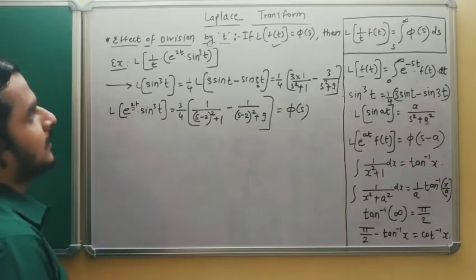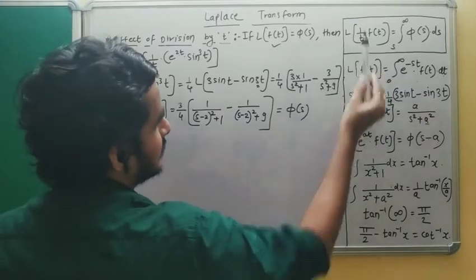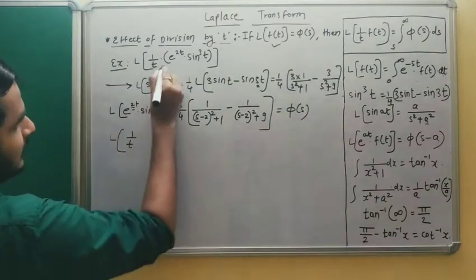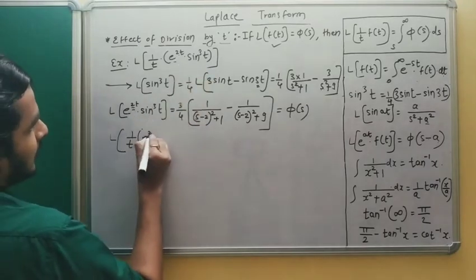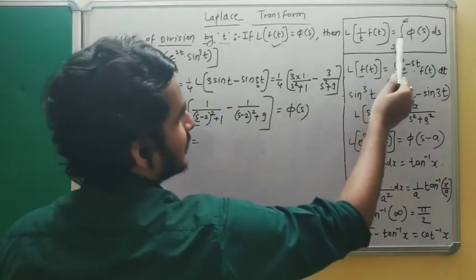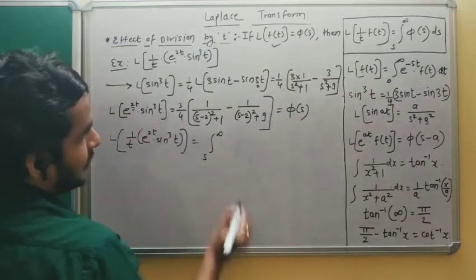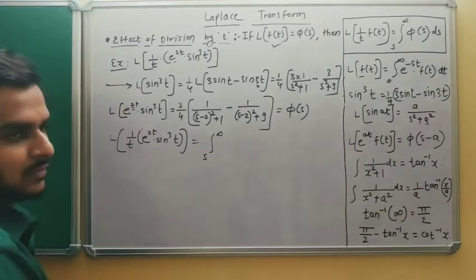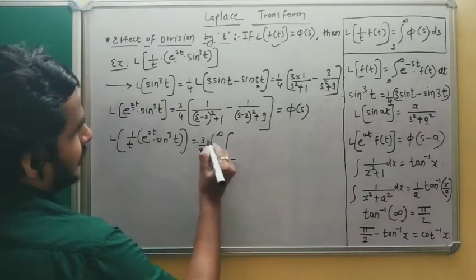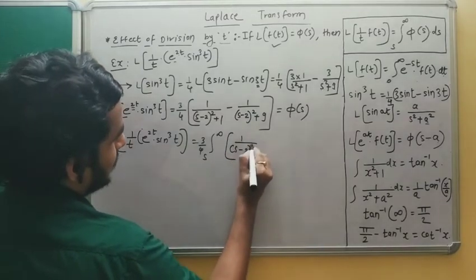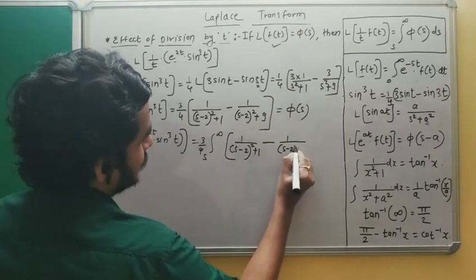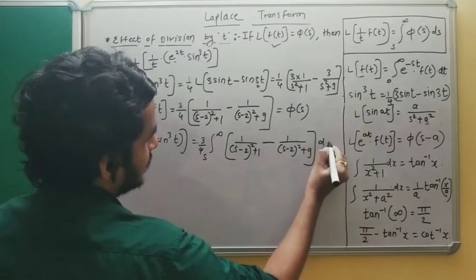Now apply the division by t property: L{(1/t)·f(t)} = ∫_s^∞ φ(s) ds. So we need ∫_s^∞ (3/4)·[1/((s−2)² + 1) − 1/((s−2)² + 9)] ds. Taking 3/4 outside the integral, we use the formula ∫ 1/(x² + a²) dx = (1/a)·tan⁻¹(x/a). For the first term, x = (s−2), a = 1; for the second term, x = (s−2), a = 3.